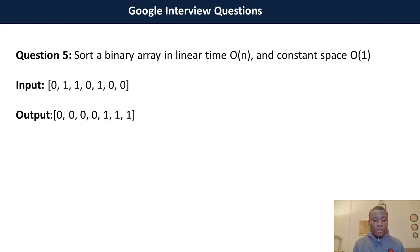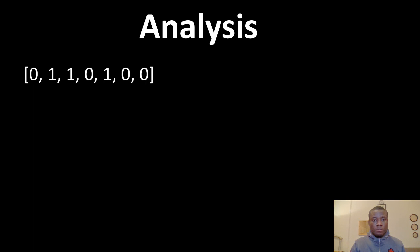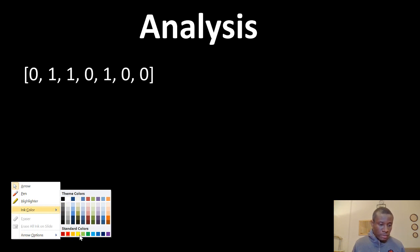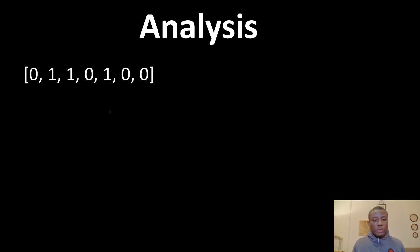Linear time means you need to iterate this array once — there are no nested loops. So the first thing we are going to do now is analyze this problem and see how we can solve it in linear time. Constant space means you are not going to use auxiliary or additional storage memory. We are going to sort this array in place. The approach is to actually iterate through this array once and then count the number of zeros. If we count the number of zeros, we now place these zeros at the beginning of the array.